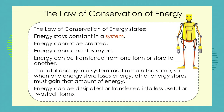In our last lesson you learnt about the law of conservation of energy — that energy stays constant in a system. We can't create energy and we can't destroy energy. What we can do is transfer energy from object to object, or within one object we can transfer energy from one form to another. But the total energy in a system must remain the same.